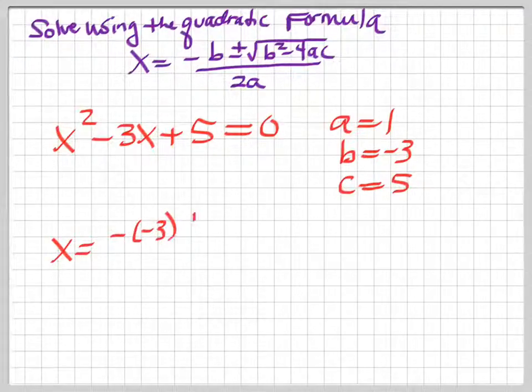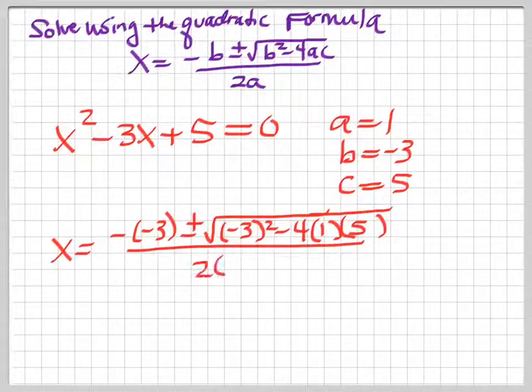So using those values and plugging them directly into the quadratic formula, we have x equals the opposite of negative 3 plus or minus the square root of the quantity negative 3 squared, and then minus 4ac, a is 1, c is 5, and then it's all over twice a, where a is 1.